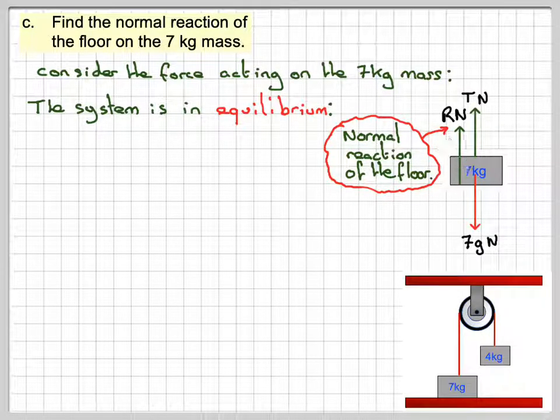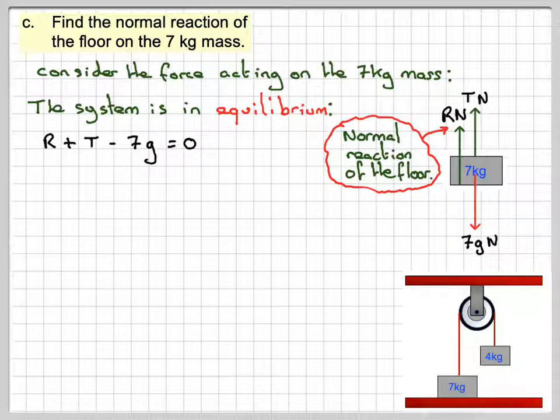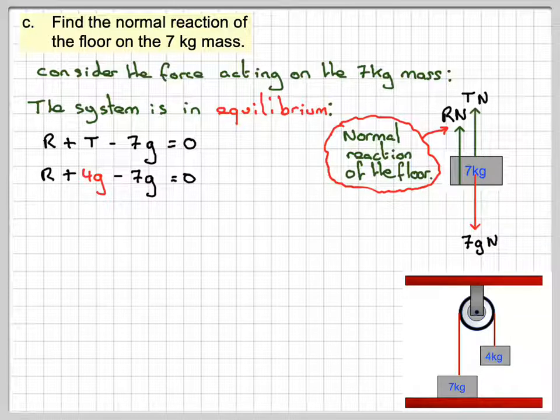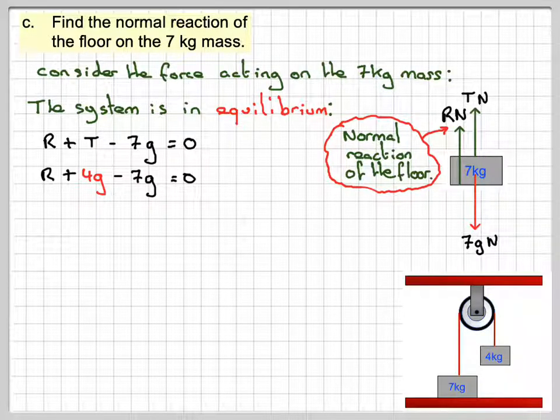And therefore we can say that R plus T minus 7g is equal to 0. Then R plus T, which is 4g minus 7g, is equal to 0.